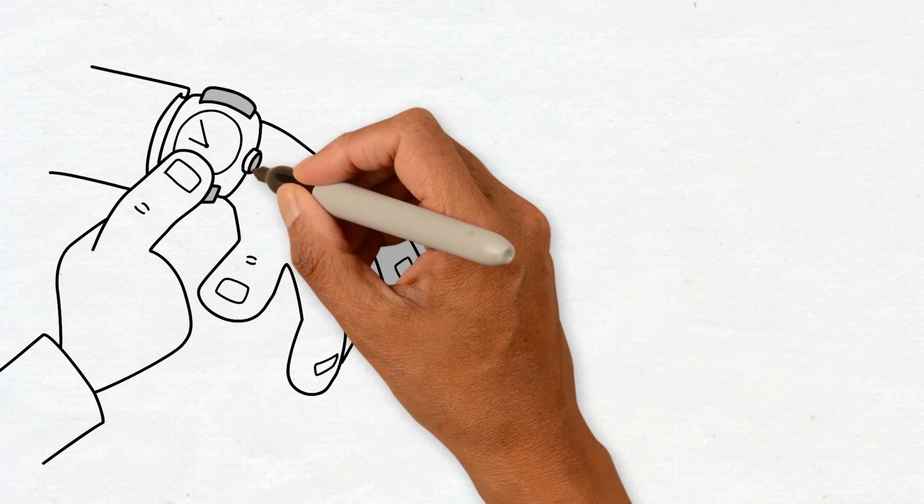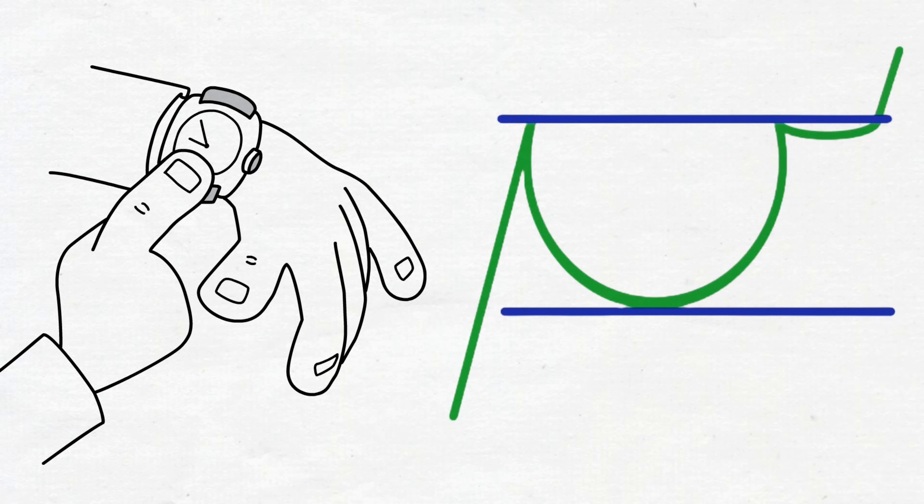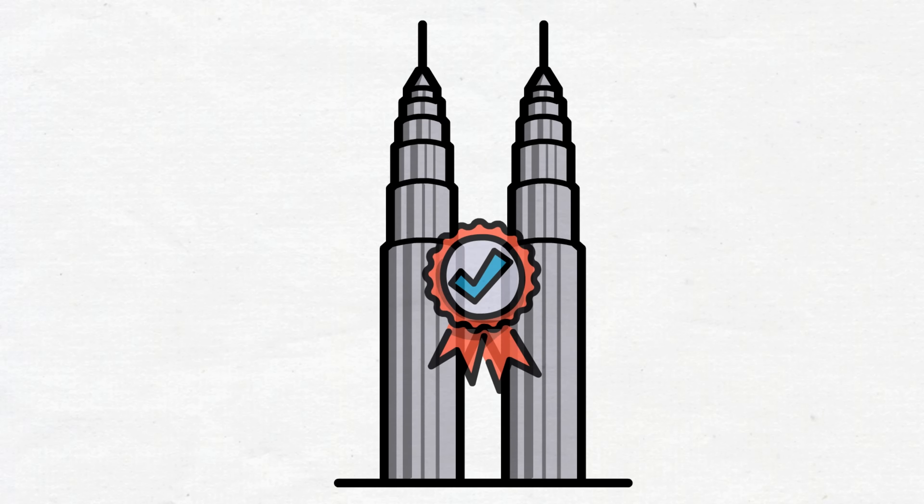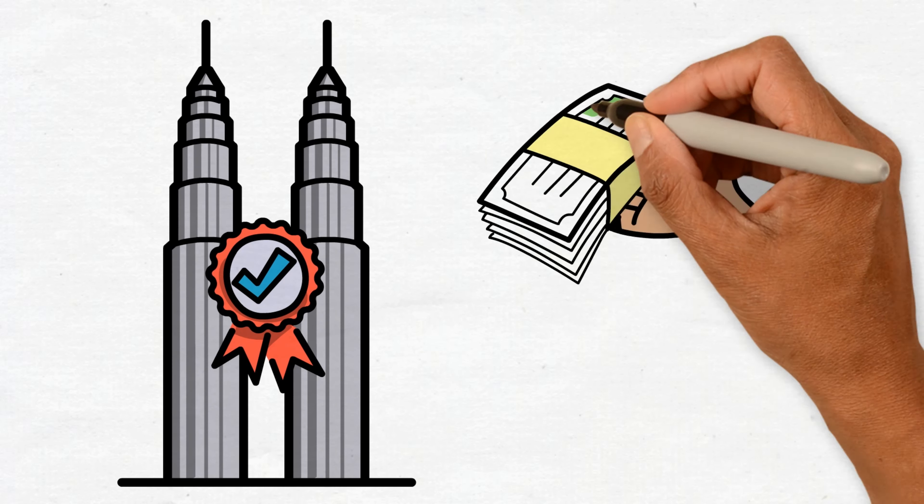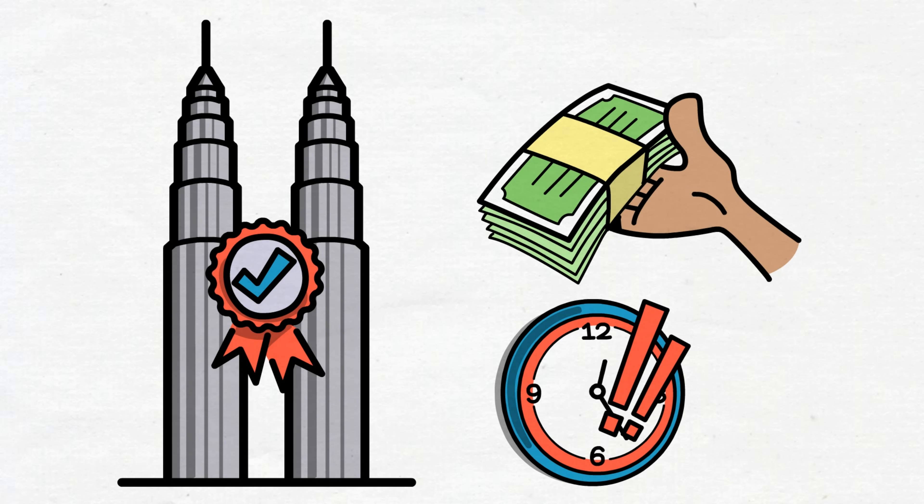However, there is a right time to buy a stock. That is when it has consolidated its base and is about to break out. The cup with handle is a surefire sign of this. So, look for great pioneering companies. And do your best to invest in them at the right time. And you'll be ahead of the game.